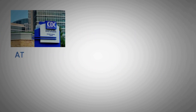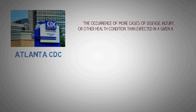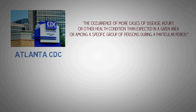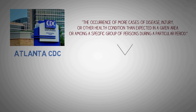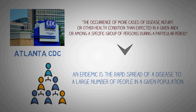The Atlanta Center for Disease Control defines an epidemic as the occurrence of more cases of disease, injury, or other health conditions than expected in a given area or among a specific group of persons during a particular period. Usually, the cases are presumed to have a common cause or to be related to one another in some way. In simple words, an epidemic is the rapid spread of a disease to a large number of people in a given population within a very short period of time.